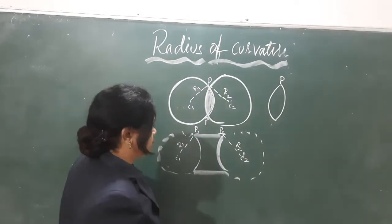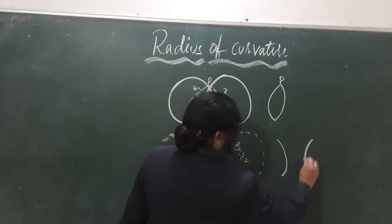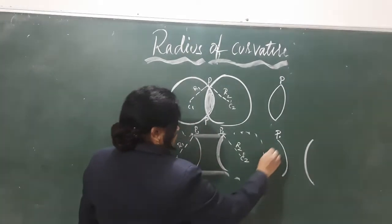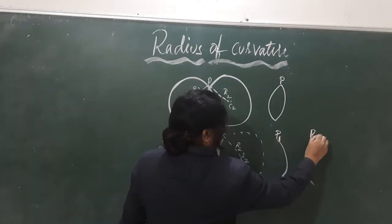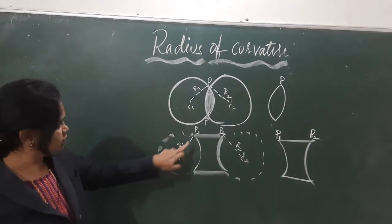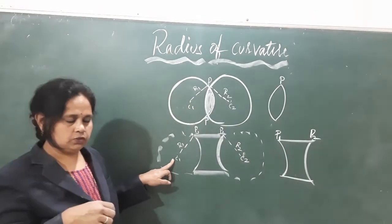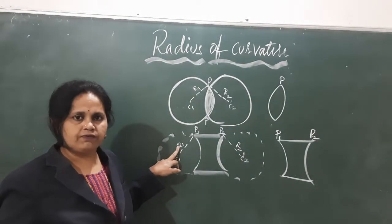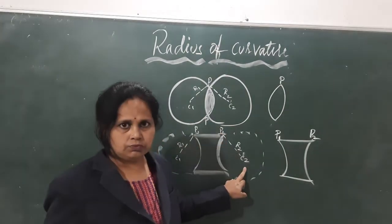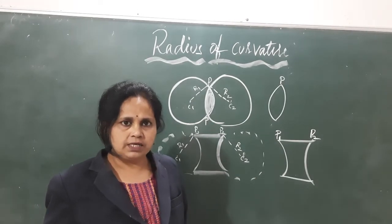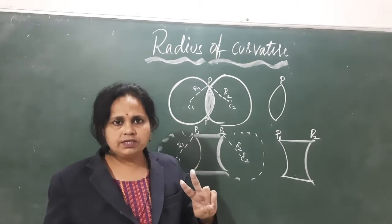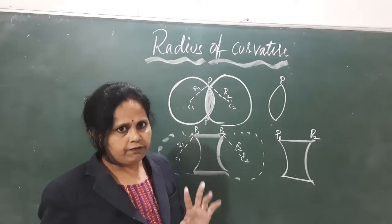For the concave lens, since the two surfaces are not mounted on each other, it has two surfaces with two separate points P1 and P2. So, from P1 to C1, the distance is called radius of curvature 1, and from P2 to C2, that distance is called radius of curvature 2.